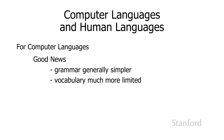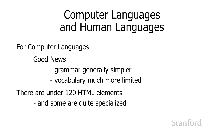There is some good news when learning computer languages versus human languages. The grammar is actually pretty simplified for computer languages compared to human languages, which can have some pretty complex rules. The vocabulary is also much more limited. It turns out for HTML, there are fewer than 120 HTML elements.